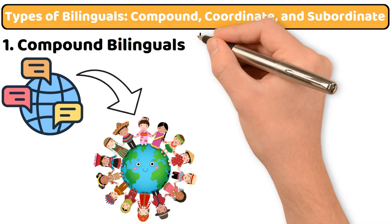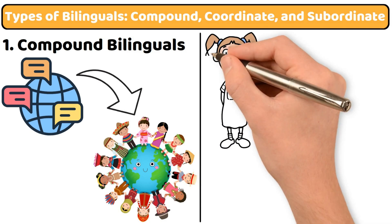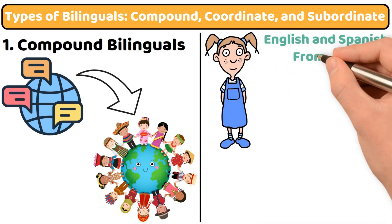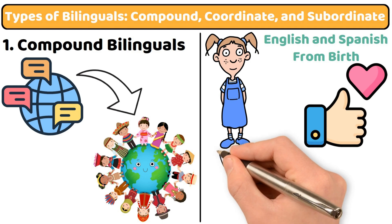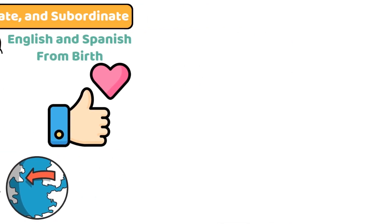weaving them together into one linguistic experience. Imagine a child like Gabriela, who grows up speaking English and Spanish from birth, making her equally fluent and comfortable in both. She experiences the world through two lenses that merge seamlessly.